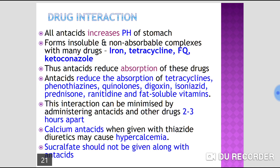All antacids increase the pH of the stomach but have no effect on acid production. Antacids form non-absorbable complexes with many drugs including iron, tetracycline, fluoroquinolones, and ketoconazole, reducing their absorption. Therefore, these drugs should be avoided concomitantly with antacids to prevent insoluble and non-absorbable complex formation.